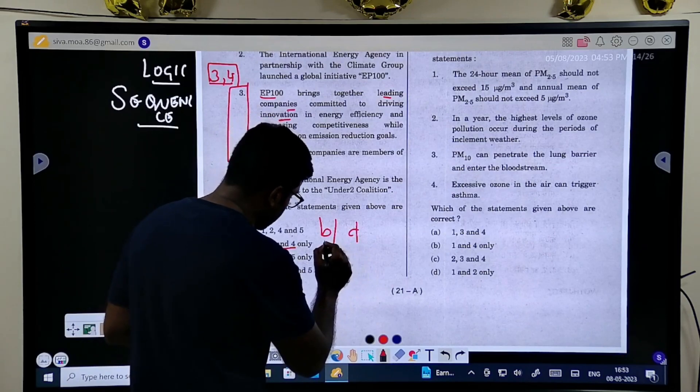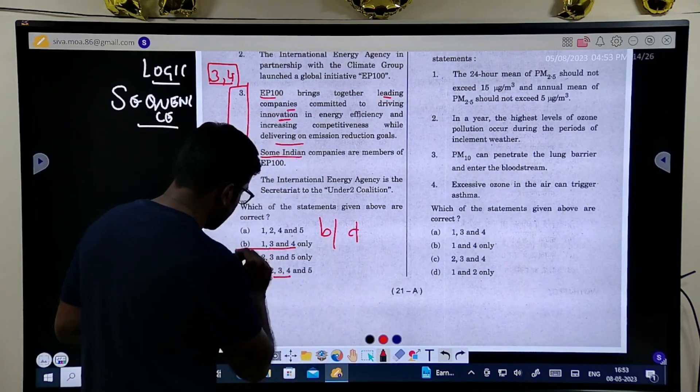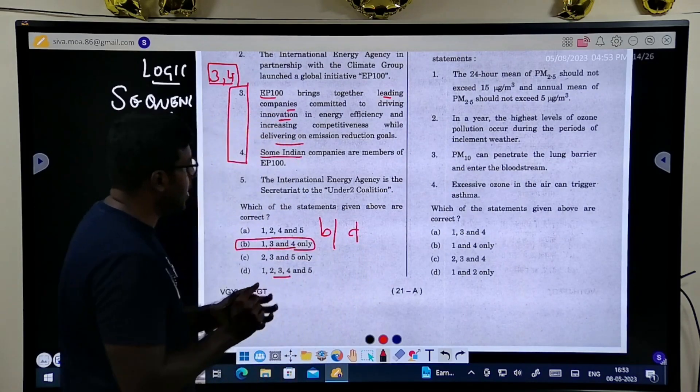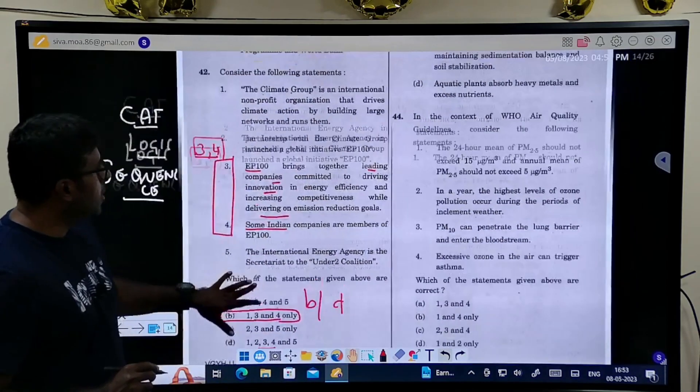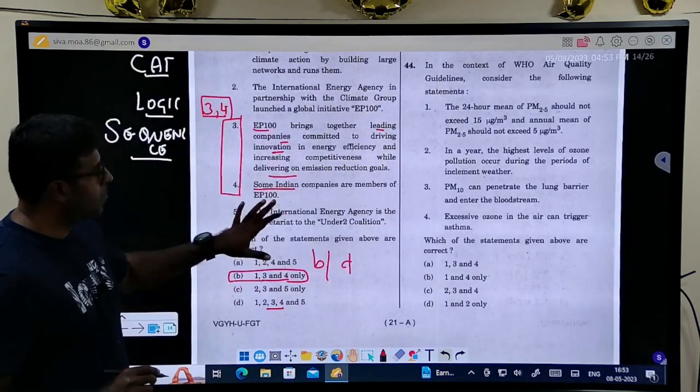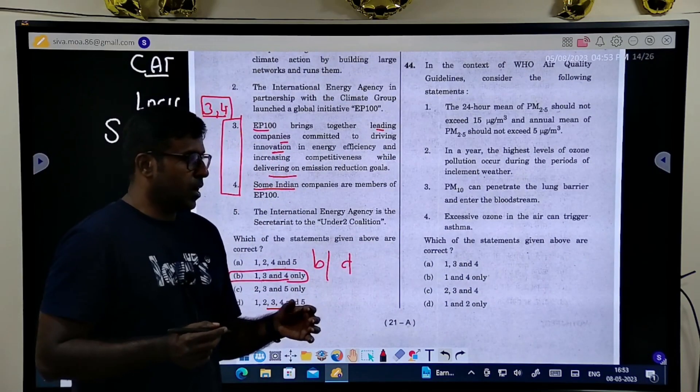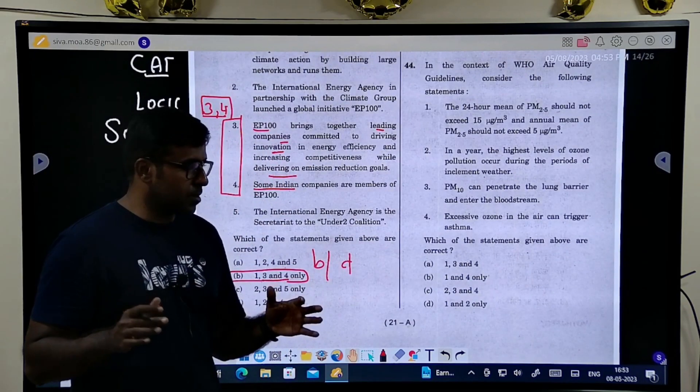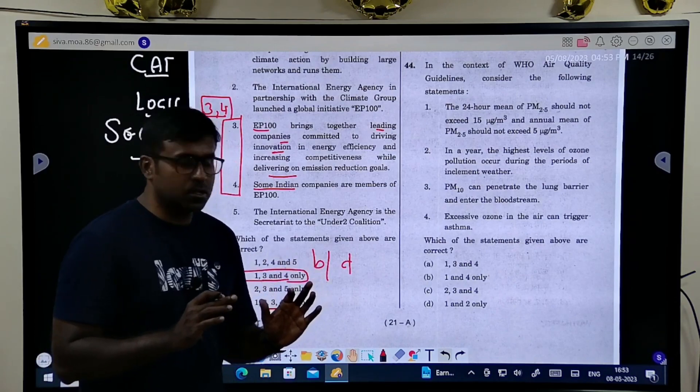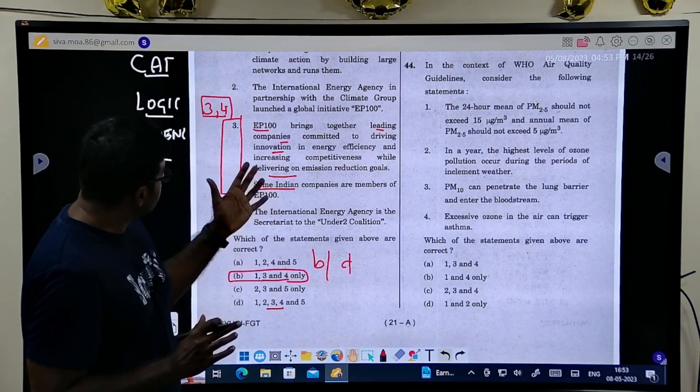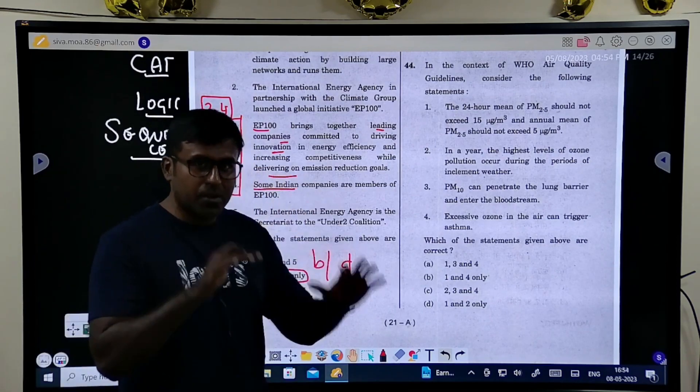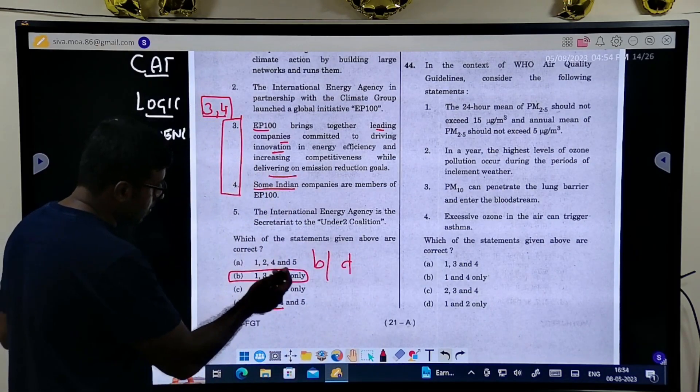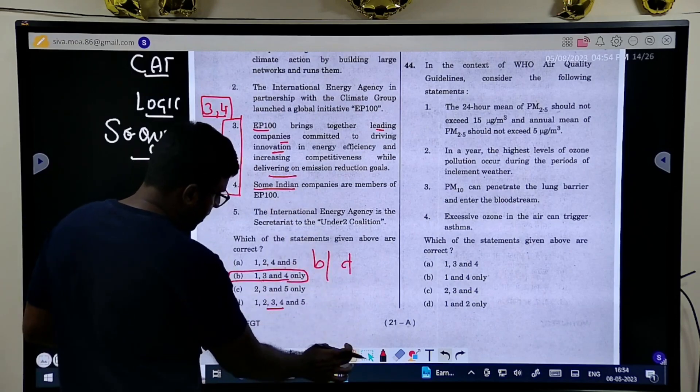In this, 3 and 4 is here, 3 and 4 is here. So either B or D, I have narrowed it down. Then I will come back again and think about these questions and answers. The answer is B. But what I would suggest is that this question can be attempted. What questions can be attempted and what needs to be left out? I cannot say a blanket statement.